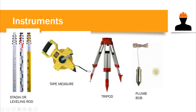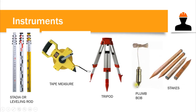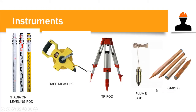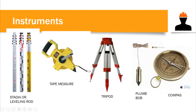We have the tripod, on which we place our instrument. We also have the plumb bob and stakes. The plumb bob ensures our theodolite is vertically aligned with the stake or point beneath the equipment. The stakes serve as markers to identify the location of our stations. We also have the compass to determine bearings or angles.